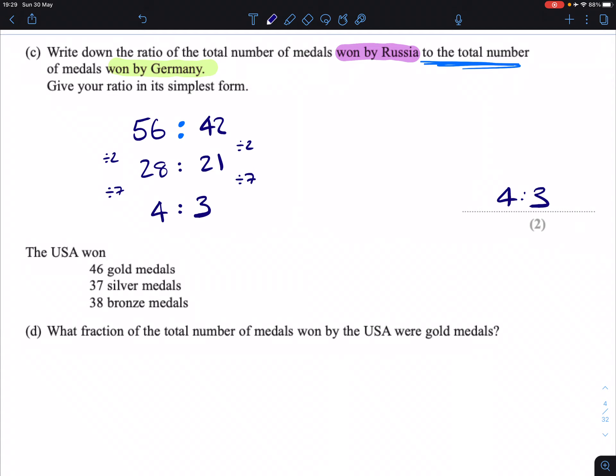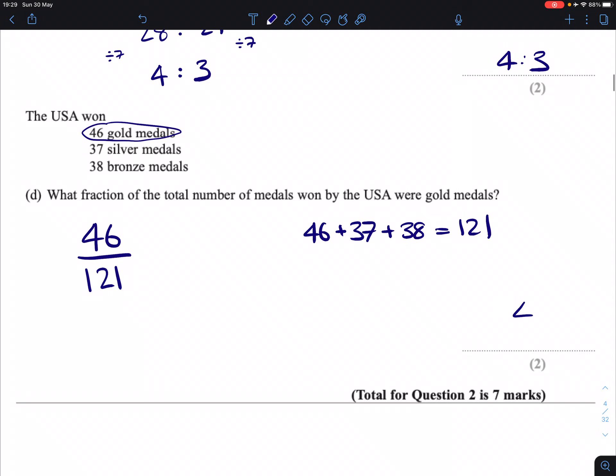The USA won 46 gold medals, 37 silver medals, and 38 bronze medals. What fraction of the total number of medals won by the USA were gold? We have 46 gold out of the total number of medals. We add together 46, 37, and 38, which will give us 121. So that is 46 out of 121. This fraction doesn't simplify, which means that is our answer.